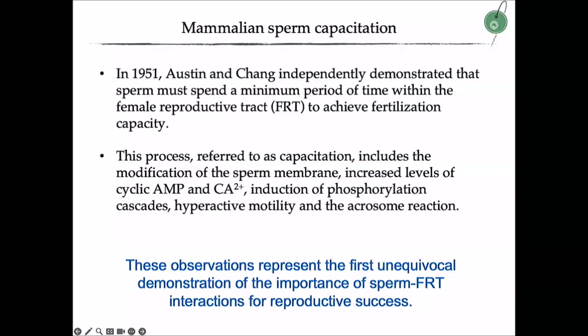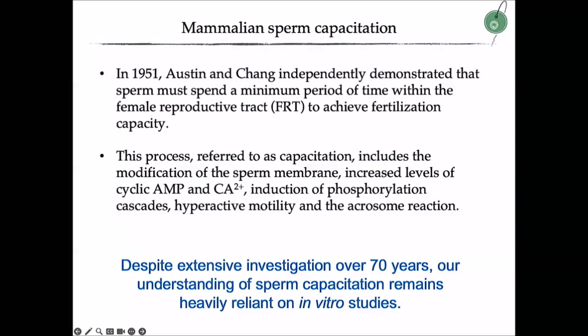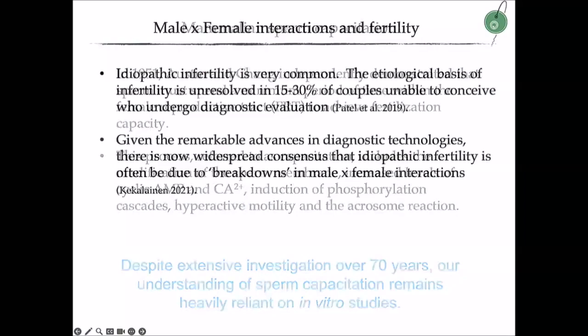These cascades ultimately result in hyperactive motility and the acrosome reaction. Those are really revolutionary observations — they represent the first unequivocal demonstration of the importance of sperm-by-female reproductive tract interactions for reproductive success. Despite extensive investigations for 70 years, our understanding of sperm capacitation is still heavily reliant on in vitro studies. The key take-home message is that studying sperm biology in vivo, in the complex selective environment of the female reproductive tract, is complicated.